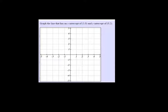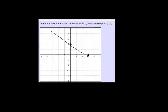Here we're going to graph a line that has an x-intercept of (3,0) and a y-intercept of (0,2). So (3,0) would be right here, and (0,2) right here. Then if I just draw a straight line through them both — in the math tool, once you click on the two points, (0,2) and (3,0), the line will automatically happen for you.